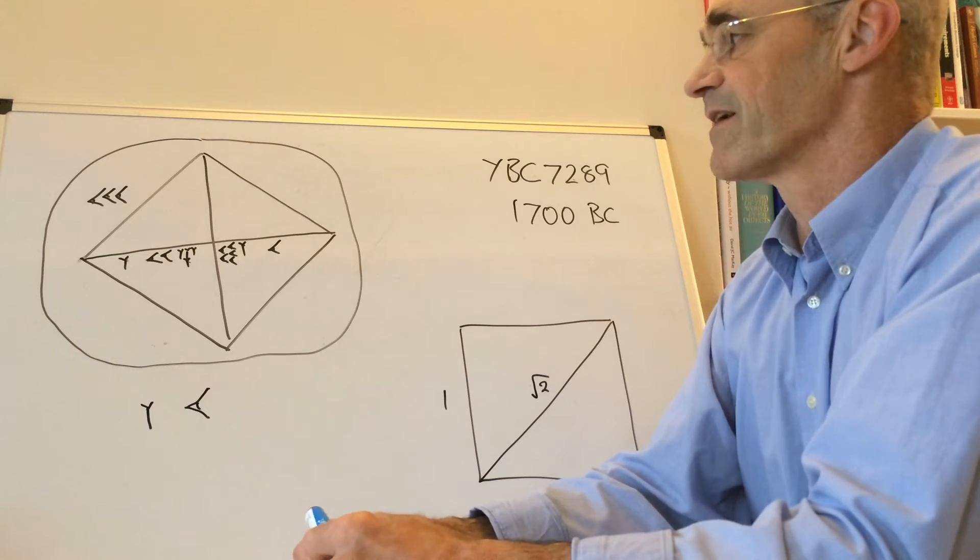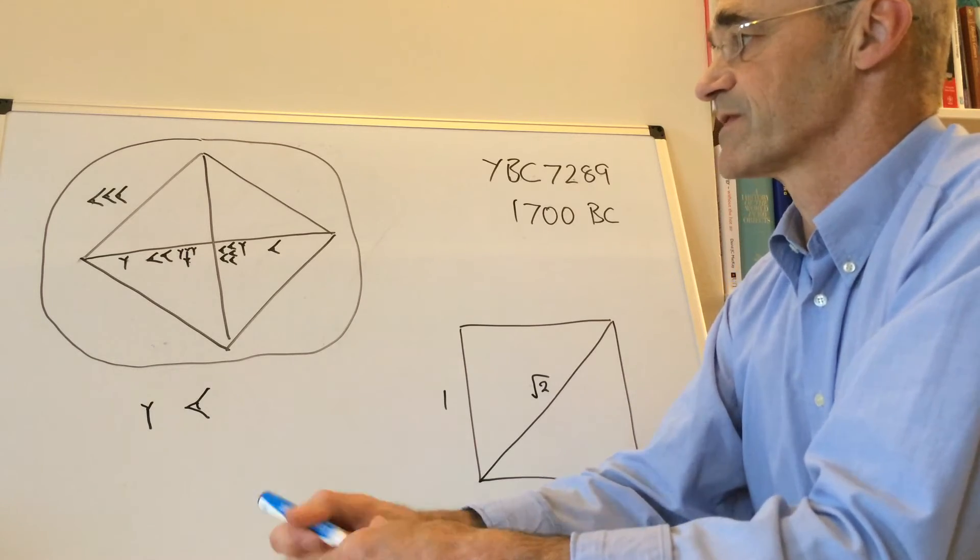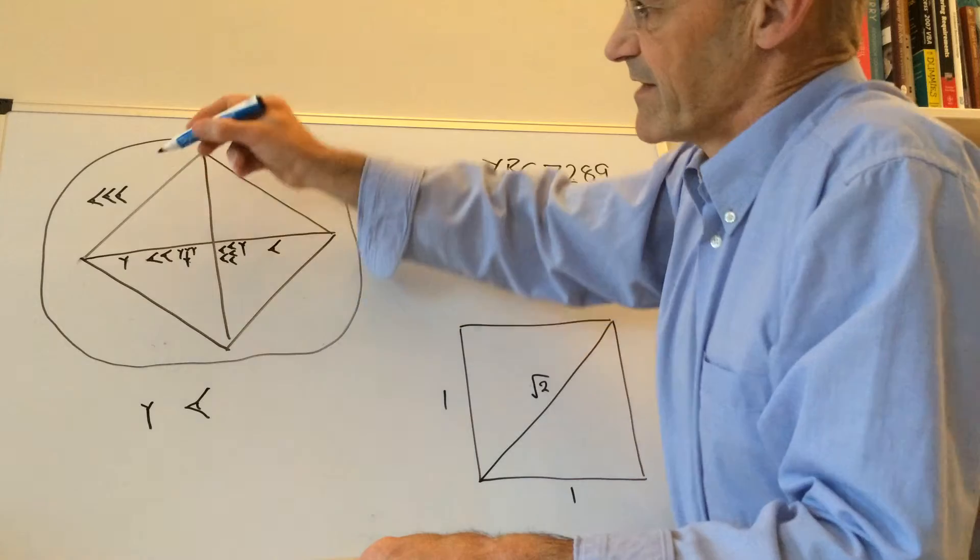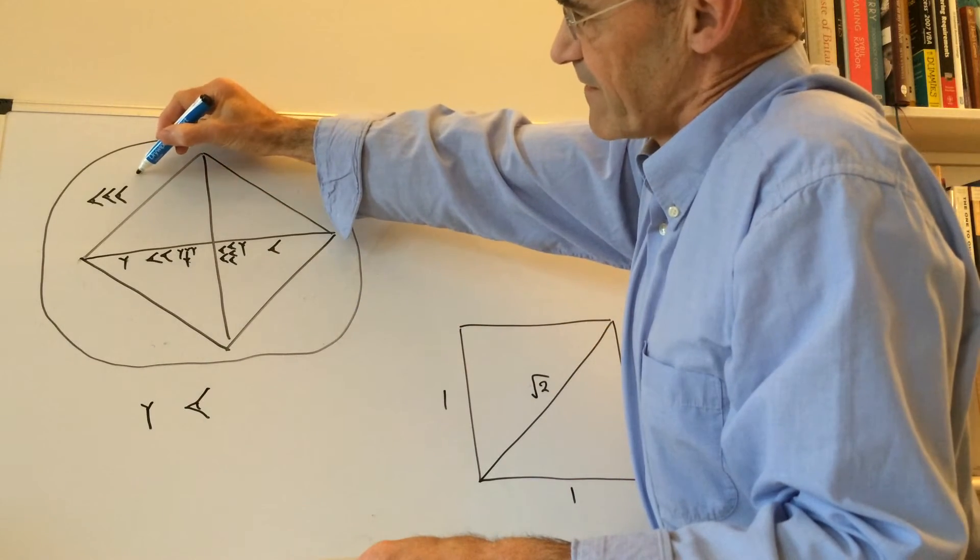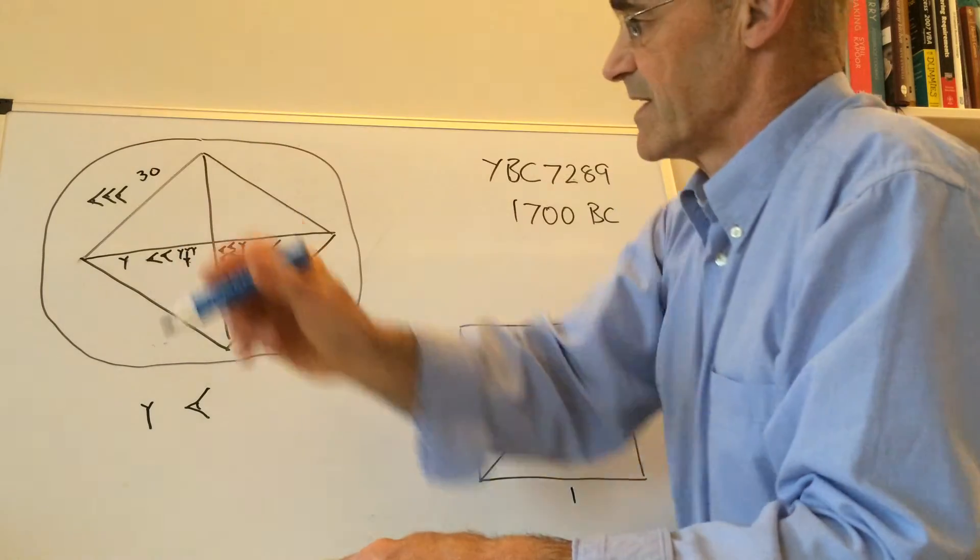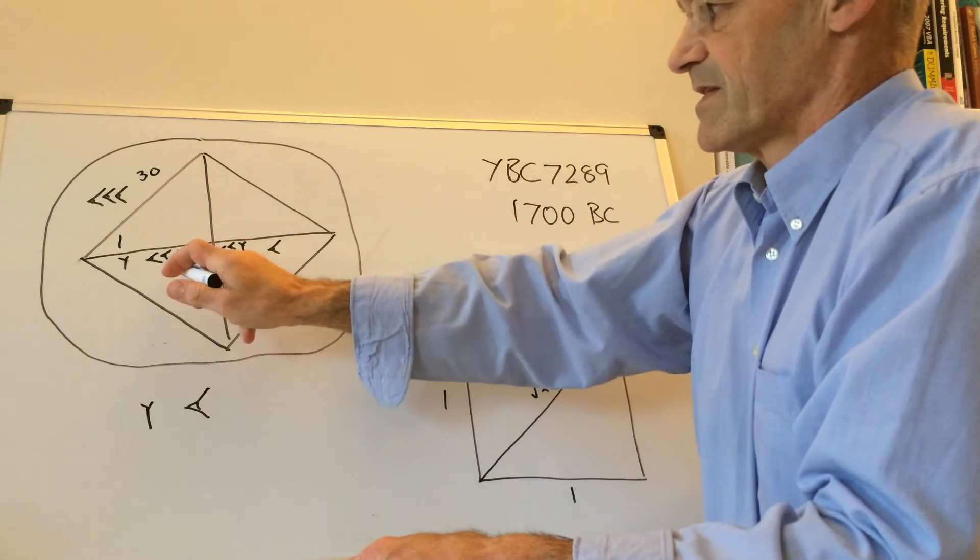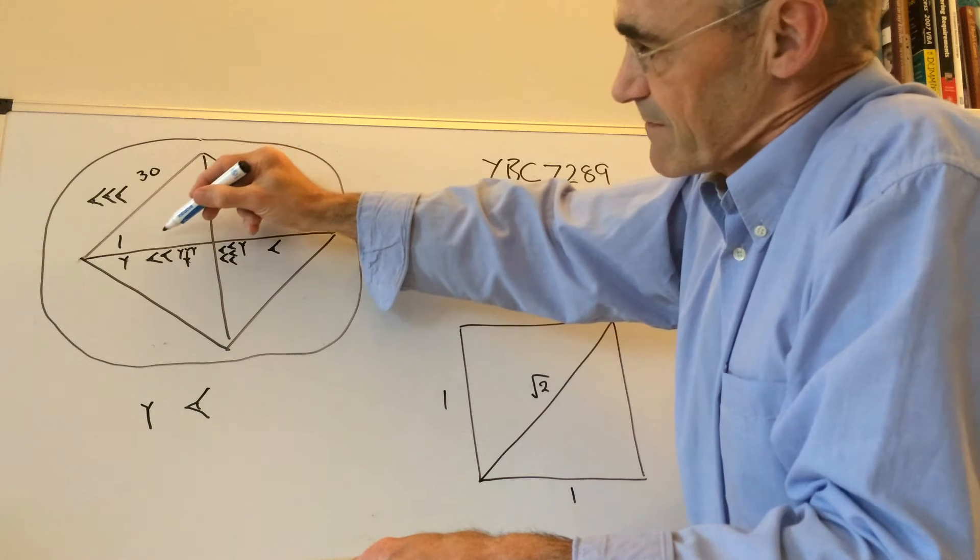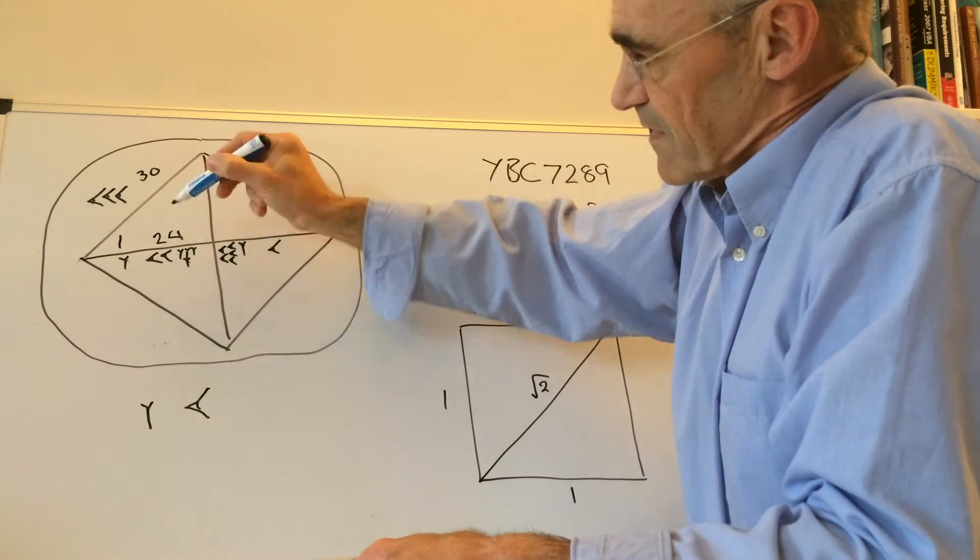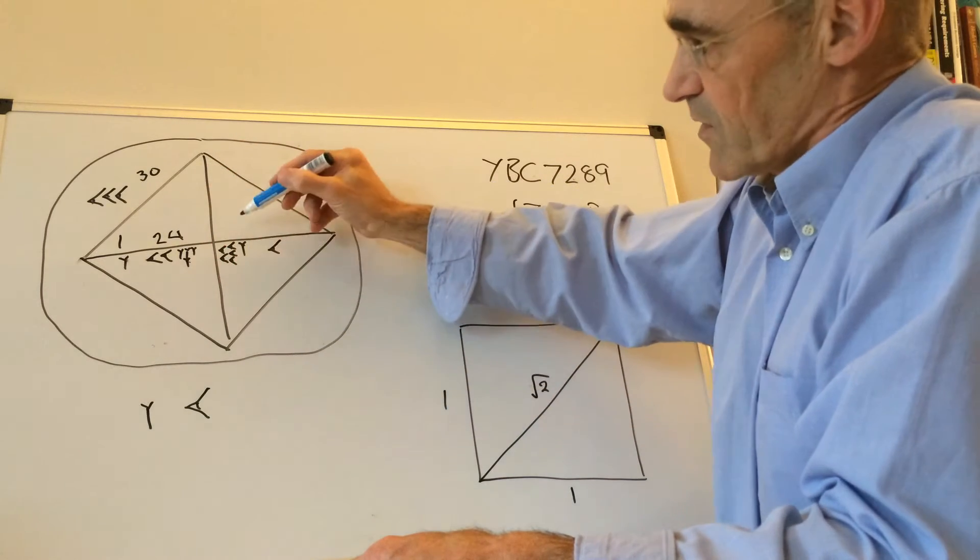When they wrote down the numerals, this would be three tens, so 30. This is a one on its own. This is two tens and four units. This is five tens and one unit. And this is one ten.